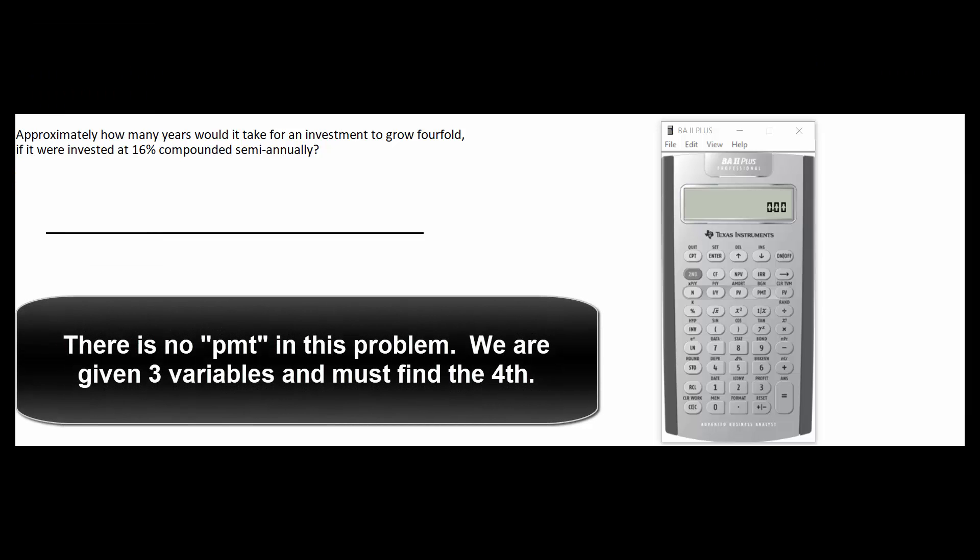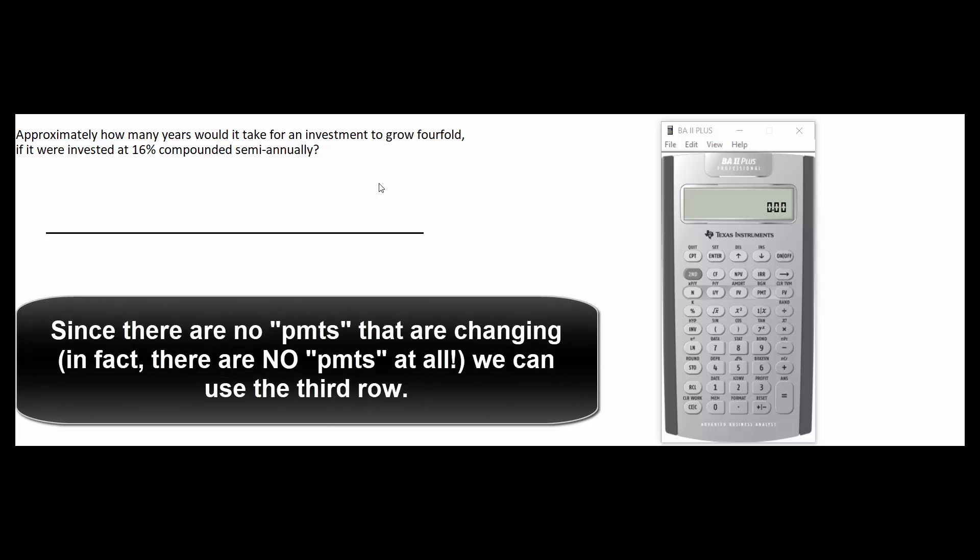This is going to be one of those instances when we're given three of the variables and we have to find the fourth. Since there's no payments in this problem that are changing we can use our friend the third row. All right so what do we know?